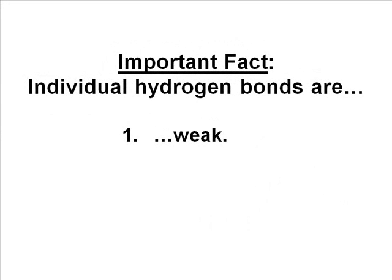A couple important facts about hydrogen bonds, about individual bonds. They're weak. I've already said this. They're not strong bonds, and they're transient. They're short-lived. They're weak because they're not full charges, and they're transient because whenever a zone of partial charge vanishes, the hydrogen bond associated with it should vanish.